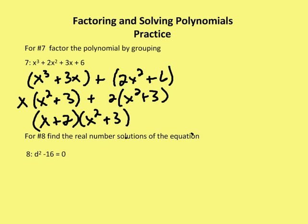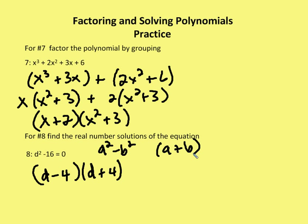Last question. Find the real number of solutions of the equation. It looks like I've got the difference of two squares. I have d minus 4 times d plus 4. Remember, a squared minus b squared is the same as a plus b times a minus b. So I have d minus 4 times d plus 4 equals 0. d is going to be equal to 4 or negative 4.